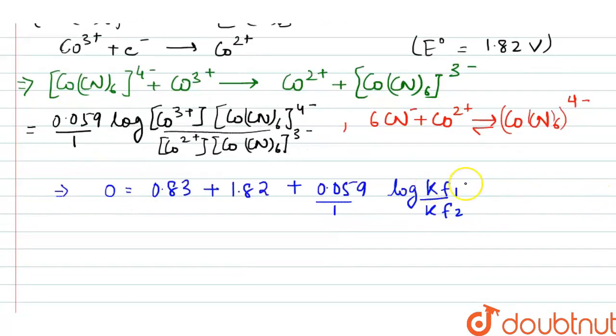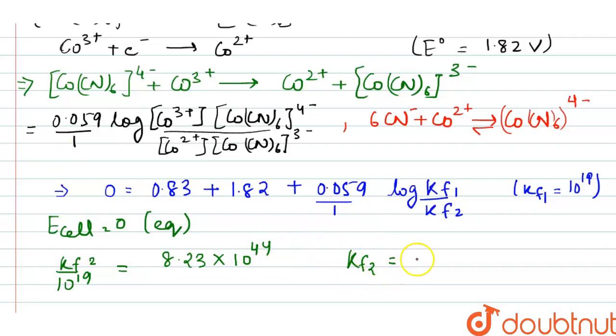So by putting this equation, Kf1 value is given, we see Kf1 is equal to 10 to the power 19. By putting the values we will see at equilibrium we know E cell is equal to 0 at equilibrium. So here Kf2 by 10 to the power 19 is equal to 8.23 into 10 to the power 24. So from this we get that Kf2 is equal to 8.23 into 10 to the power 63.